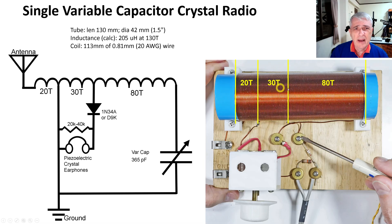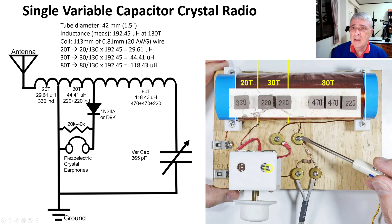This is a breakdown of that radio. So here are 20 turns, here are 30 turns, and here are 80 turns. You can see the taps here and here. So we have to have the equivalent inductance in each of these pieces, and this is what I have calculated.